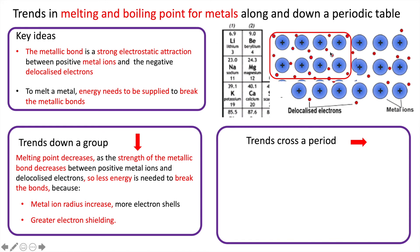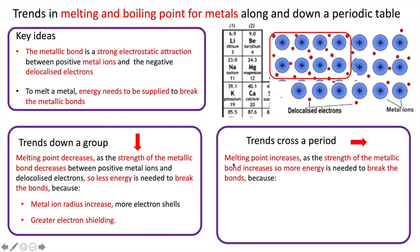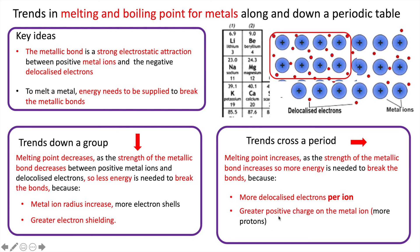As you go along the period, the melting point and boiling point both go up. For an exam answer: the melting point increases as the strength of the metallic bond increases, so more energy is needed to break the bonds. The metallic bond increases because firstly there are more delocalized electrons per ion, and secondly there is a greater positive charge on the metal ion because there are more protons.